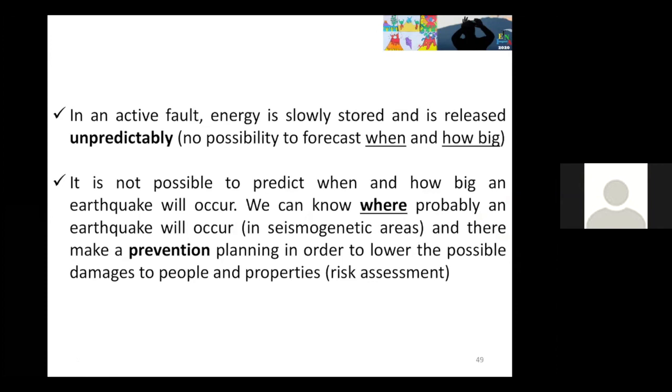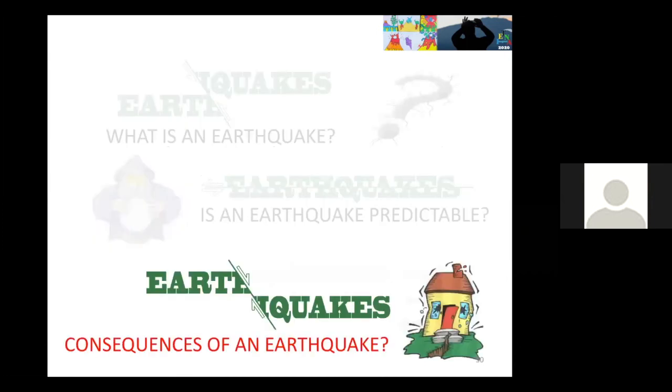This experiment that is very simple allows us to visualize the reason why earthquakes are not predictable. In an active fault, energy is slowly stored and released in an unpredictable way. There is no possibility to forecast when and how big the next earthquake will be. But what we can say, because we know very well, is where the earthquakes will occur, in seismogenic areas.